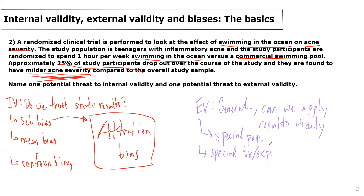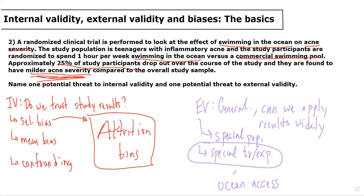In this case, even if they find that swimming in the ocean leads to improved acne severity, I would be worried about the external validity of these results, given that it's a very special treatment or exposure. Only people who live on the coast are able to actually access the ocean. Therefore, the results of this study may not be generalizable to people who live in the Midwest or northern parts of the United States — places where they're not able to access the ocean. That would be one major threat to external validity, given that the results can't be applied to areas without ready access to an ocean.